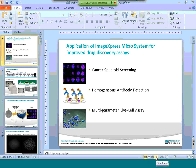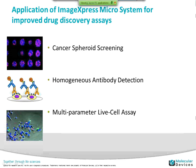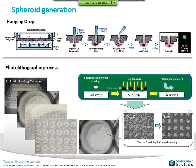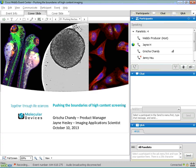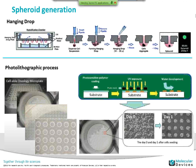I'm going to talk to you about some of the applications we've done recently on the new ImageExpress Micro XLS — some pretty exciting things. We have an application note on doing cancer spheroid screening, homogeneous antibody detection — which is a kind of new assay for imaging — and a multi-parametric live-cell assay. First, we'll talk about spheroids. There are different ways that spheroids can be generated from cells. Hanging drop is one method where you pipette cells into a chamber, they sink to the bottom of the drop, and over a period of time they aggregate and form a spheroid.